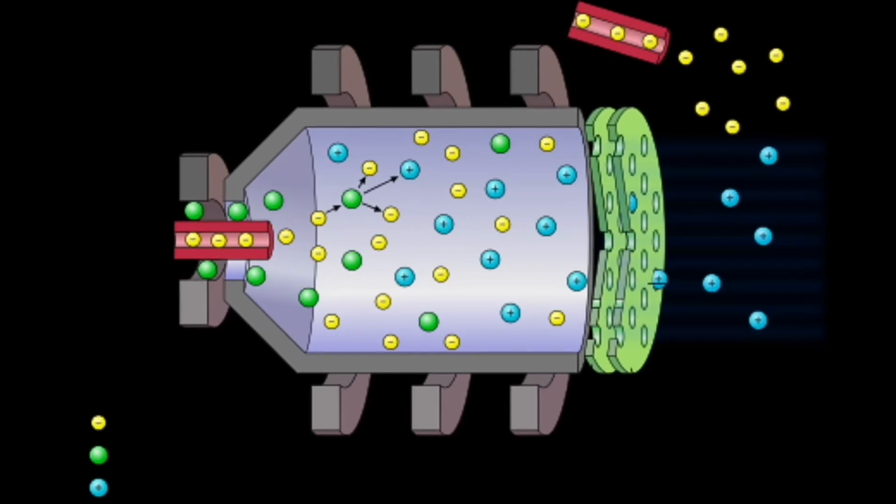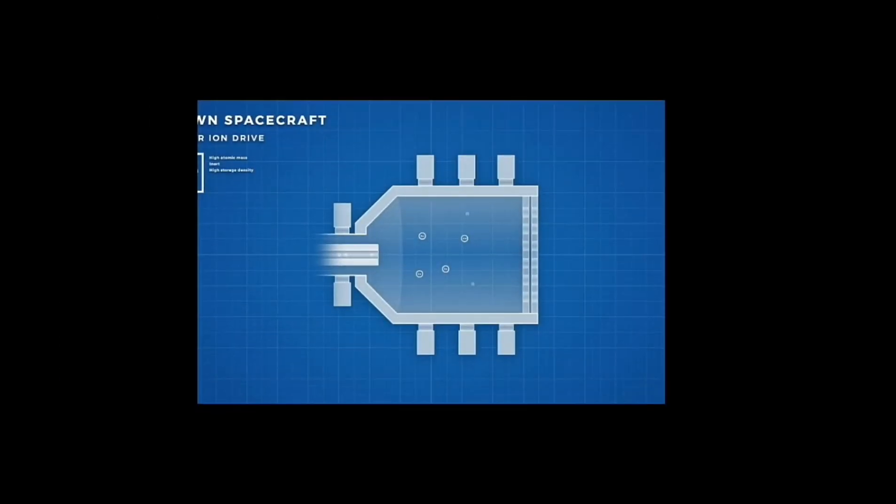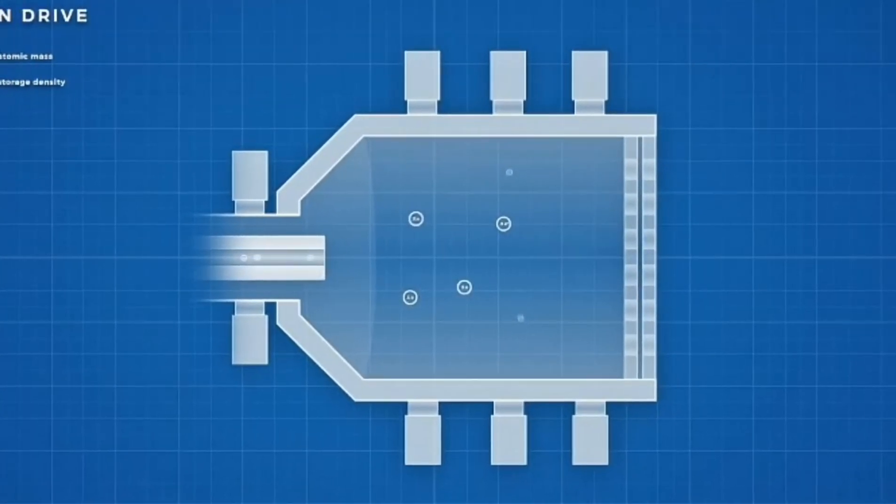Electrons produced by the discharge cathode are attracted to the discharge chamber walls, which are charged to high positive potential by the voltage applied by the supply. Neutral propellant is injected into the discharge chamber where the electrons bombard the propellant to produce the positive-charged ions and release more electrons.